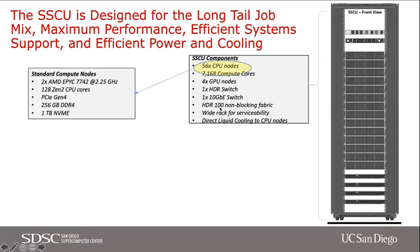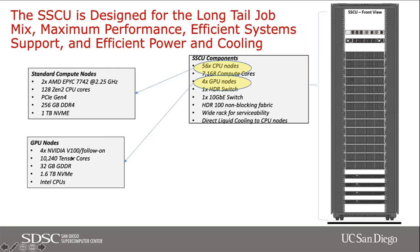Each standard compute node is two AMD EPYC 7742 processors at 2.25 gigahertz, with 128 Zen 2 CPU cores. It features PCIe Gen 4, 256 gigabytes of RAM per node — DDR4 at 3.2 gigahertz — and a terabyte of NVMe. You have a lot more space per node and a lot more cores per node, so keep in mind to use the local scratch if you have an IOPS-heavy workload.